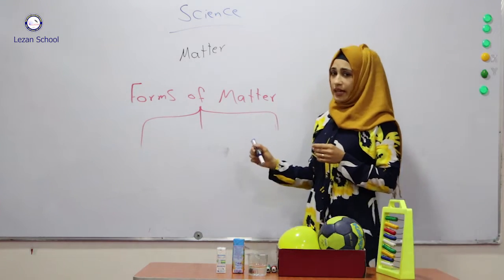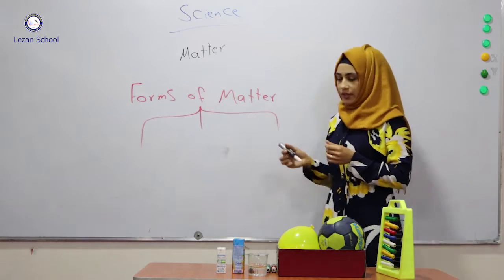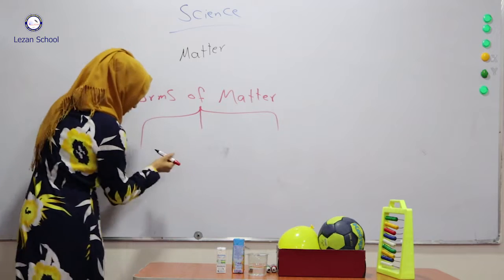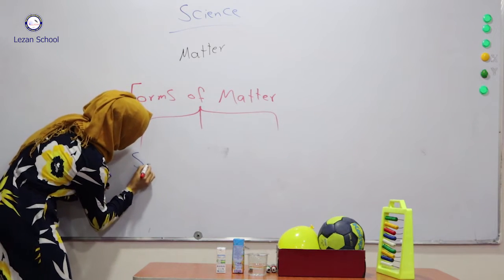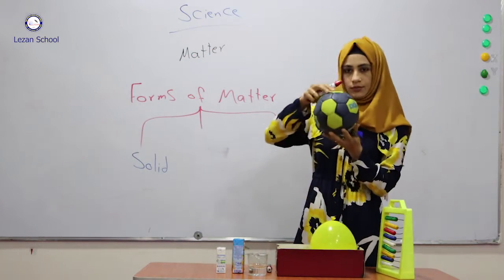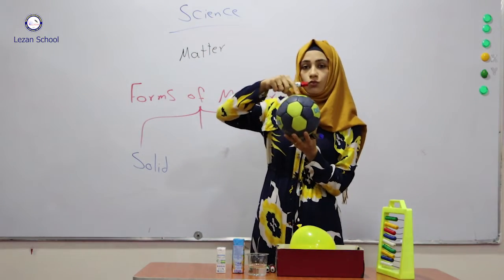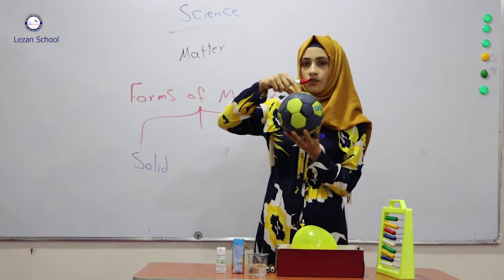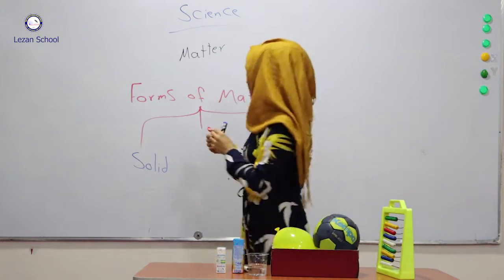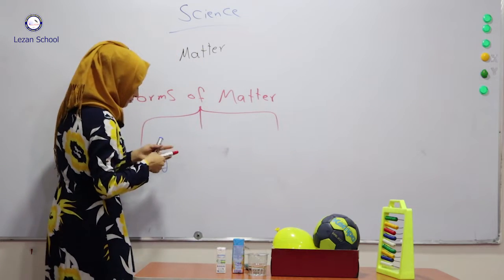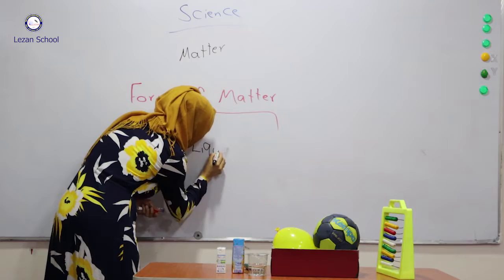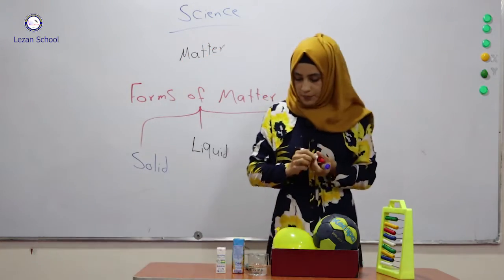We have three types of matter. One of them is solid. For example, this ball — this is solid. This is one of the types of matter.